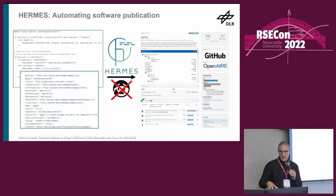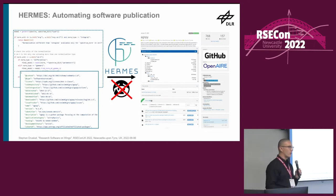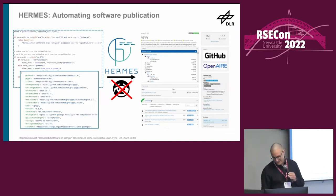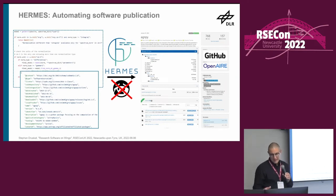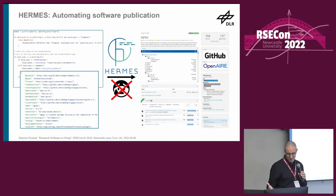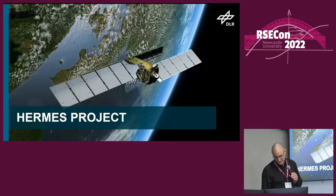This is where our project Hermes comes in. We try to give you back control over the publication process and over the metadata. We also try to make it easier for you to publish software with rich metadata, because the source code repos already have all that metadata — so why not use that to make the publication richer in an automated fashion?